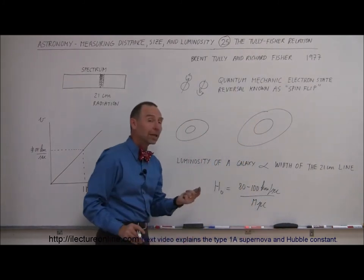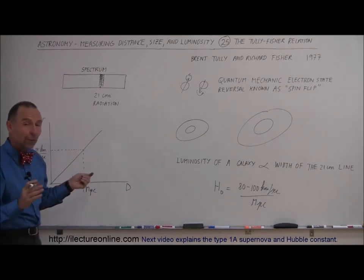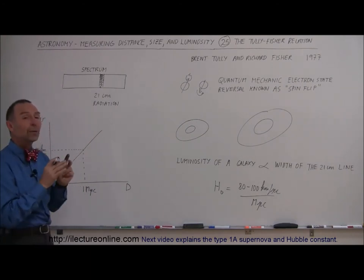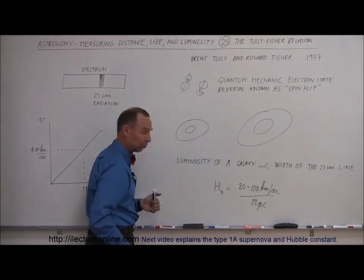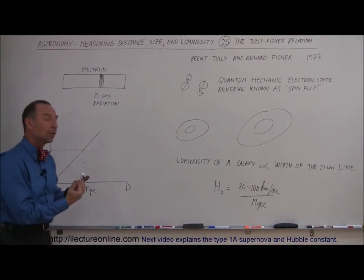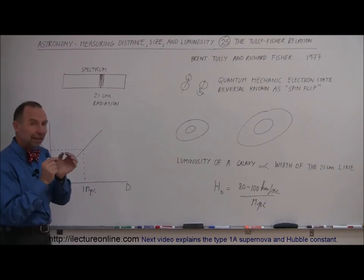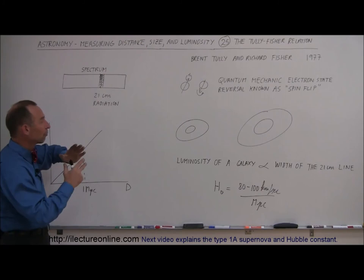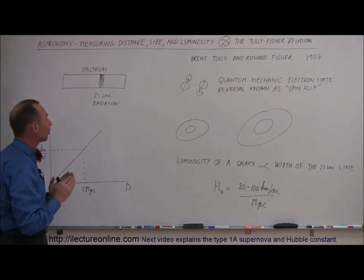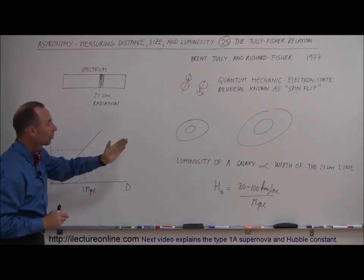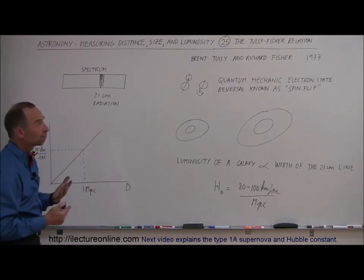Notice that when Hubble came up with his constant, it was around 500 or 550. With Tully and Fisher, we were able to narrow that down to between 80 and 100 — still not correct, because today we know it's much closer to 73. But it was a nice improvement, an independent way of measuring the Hubble constant accurately. That simple observation — that for large, luminous galaxies the line is very much spread out, and for small galaxies it's much more confined to a narrow area — when they found that linear relationship, they were able to turn that into a more accurate value for the distance of galaxies. Very nice.